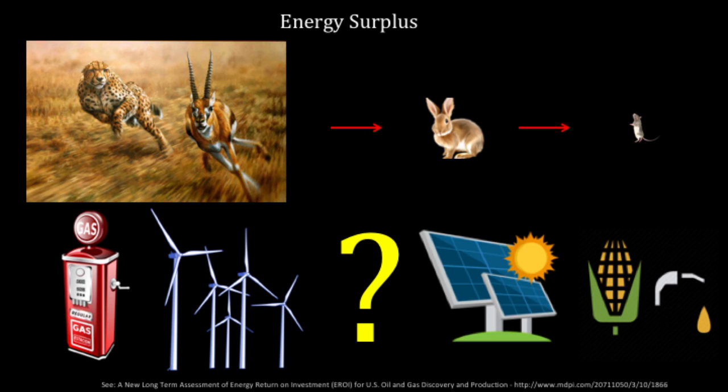Let's not forget energy surplus — different energy types have different energy outputs for the amount of energy and non-renewable resource inputs. Gasoline, wind turbines, solar panels, and biofuels like corn ethanol all have different amounts of energy surplus. Corn ethanol, for example, is really not an energy source — it's an energy conversion where we take natural gas, fertilizer, sunlight, and water and convert a crop into a liquid fuel.